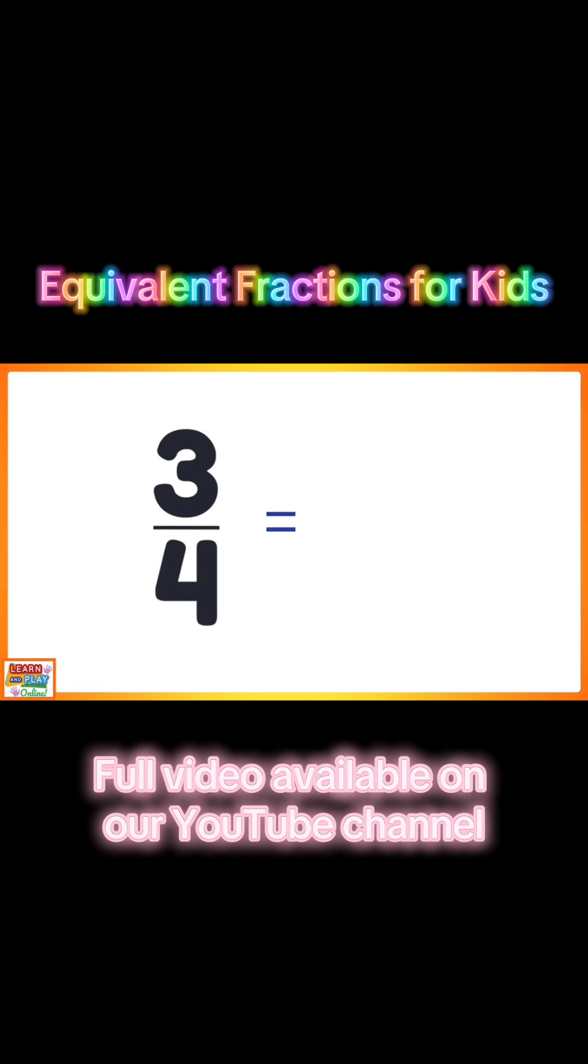Find the equivalent fraction for 3 quarters if you were to multiply this fraction by 4. 3 times 4 equals 12, and 4 times 4 equals 16. So 3 quarters is equivalent to 12 over 16.